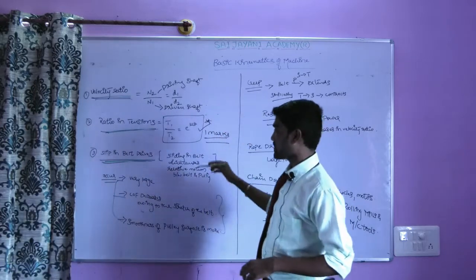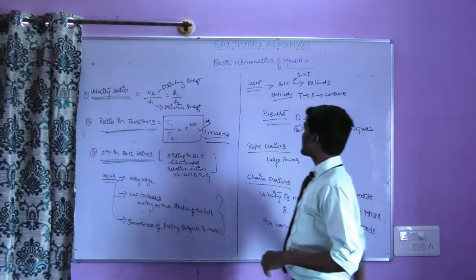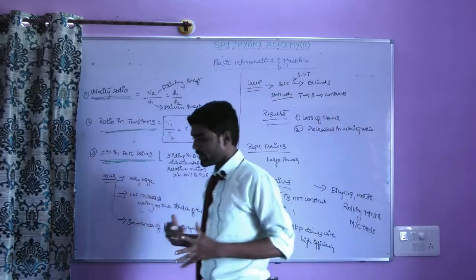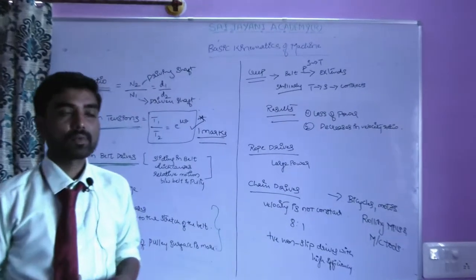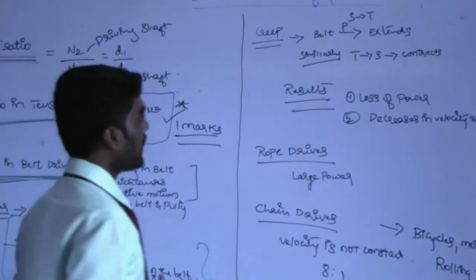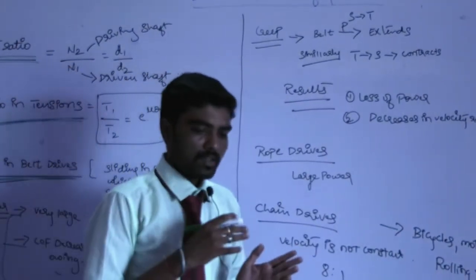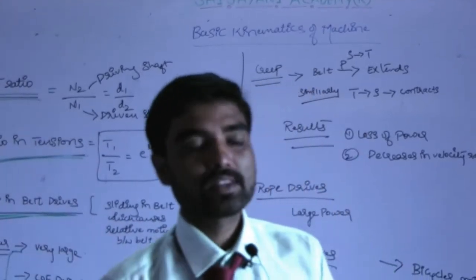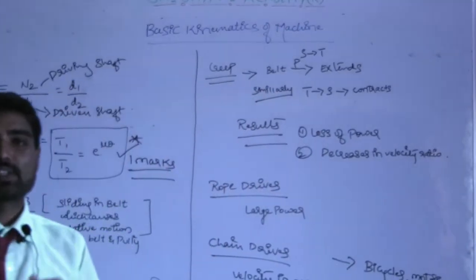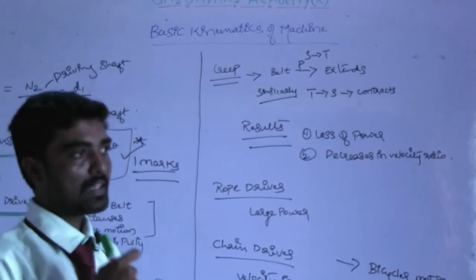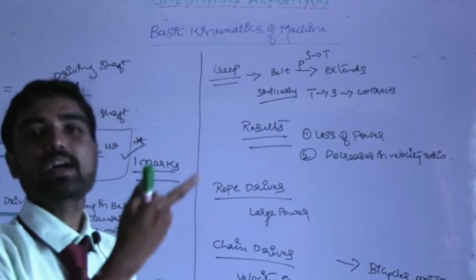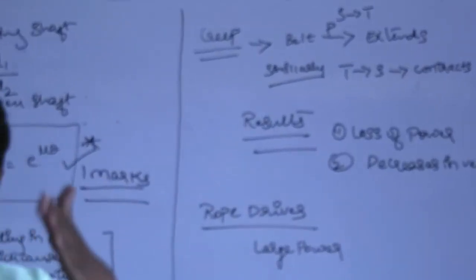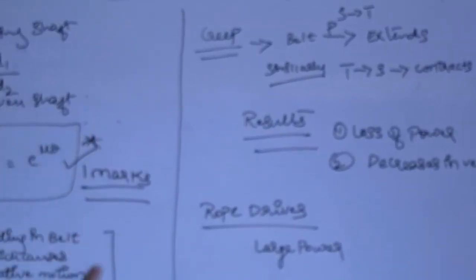This comes under slip in the belt. The next concept is creep. When creep occurs in a belt, the belt will have tensions — a slack side and a tight side. Once the belt is recognized, the belt will be transferred with these tensions.